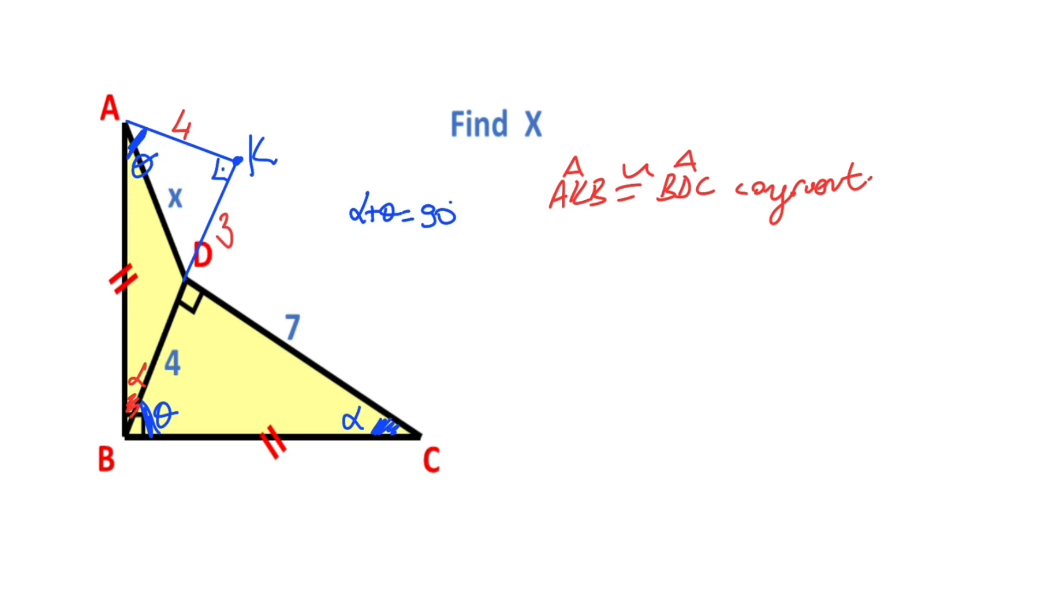And for this triangle, if we apply Pythagorean theorem, three squared plus four squared equals X squared. That means X must be equal five units. This was the first method.